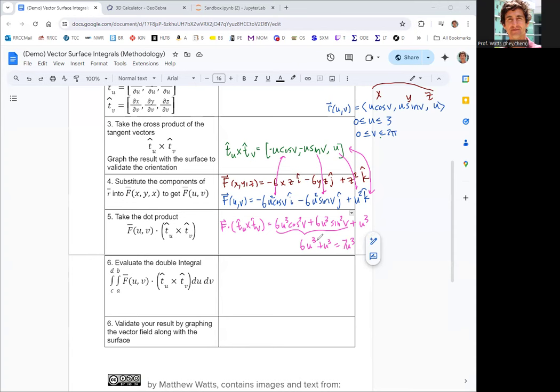So that dot product from step 5, that's what you actually integrate. This is the double integral of that over u and v. We're going to integrate 7u cubed. We are using u and v, so du dv. We got our limits of integration set by the inequalities for the parameters when we did the parameterization. u goes from 0 to 3 and v goes from 0 to 2 pi.